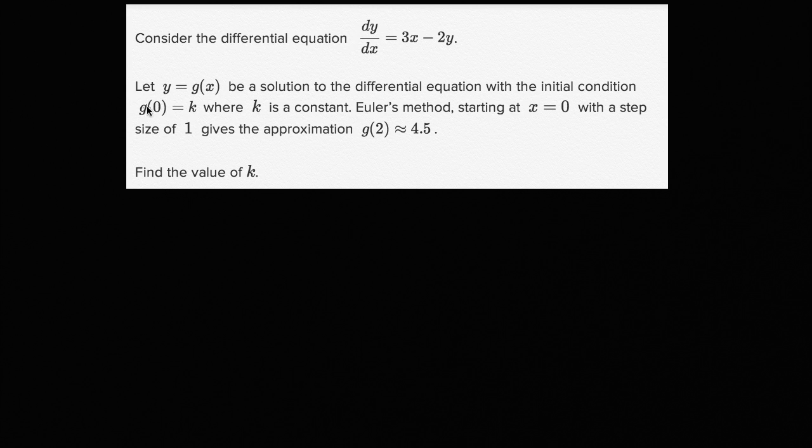So once again, this is saying we're gonna start with this initial condition. When x equals 0, y equals k, and we're going to use Euler's method with a step size of 1.